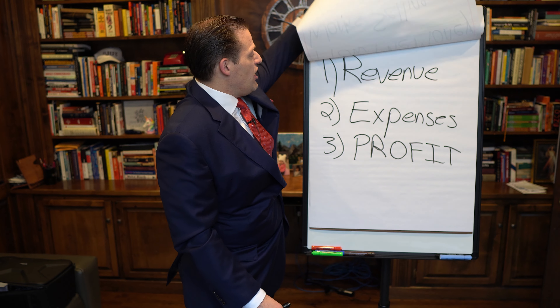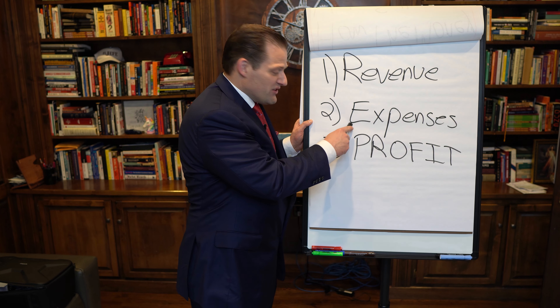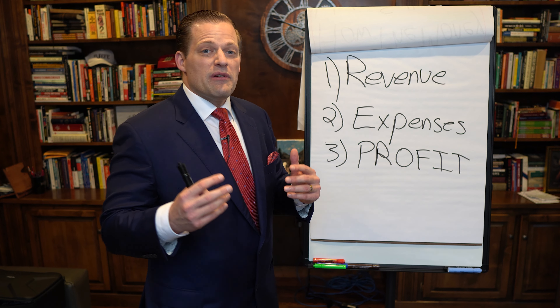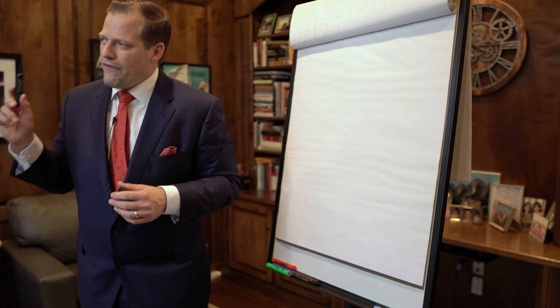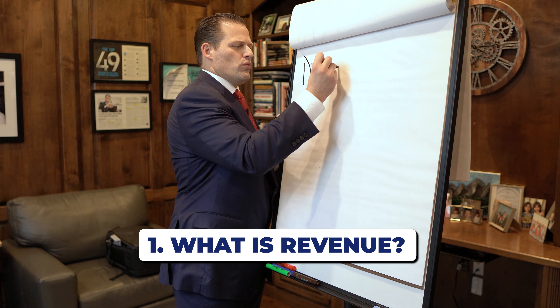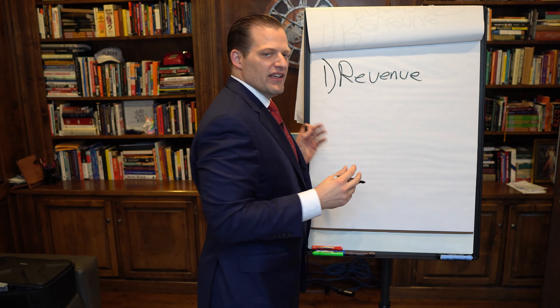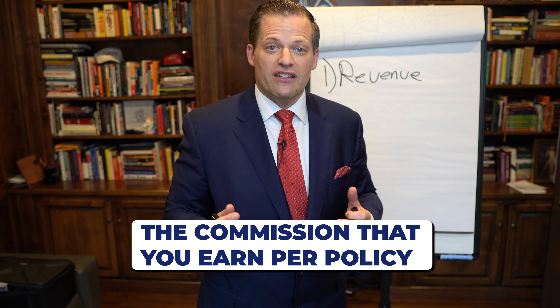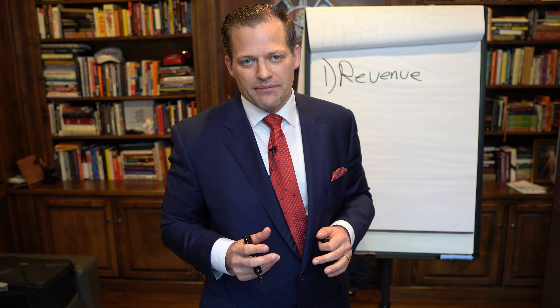The first thing you need to know is revenue, expenses, and profit. Let's go into a little more detail on how that works. The first thing you've got to know is what is revenue? Revenue is pretty easy to understand. Think of it as your commission that you earn per life insurance policy. How do you determine what commission you make per policy?